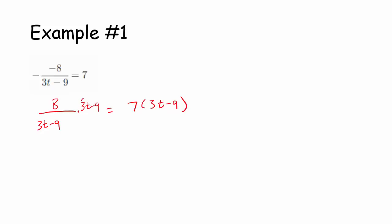Get some parentheses going on here. So now look what happens. On the left-hand side, you have 3t minus 9 in the denominator here, and then you're multiplying by 3t minus 9. So 3t minus 9 divided by 3t minus 9, that's just 1, and 8 times 1 is just 8.